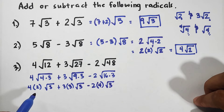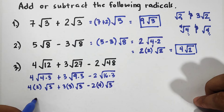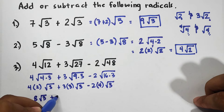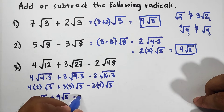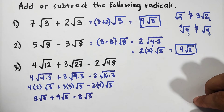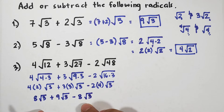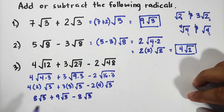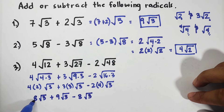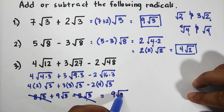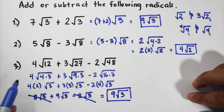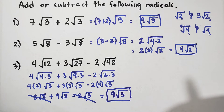Simplify the coefficients outside: 4×2 = 8, so 8√3. Then 3×3 = 9, so 9√3. Then −2×4 = −8, so −8√3. Now all radicals are similar: 8√3 + 9√3 − 8√3. The 8√3 and −8√3 cancel out, and what remains is simply 9√3. This is the final answer for number 3.